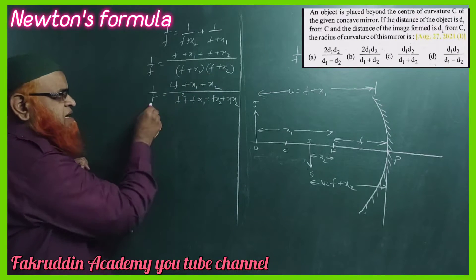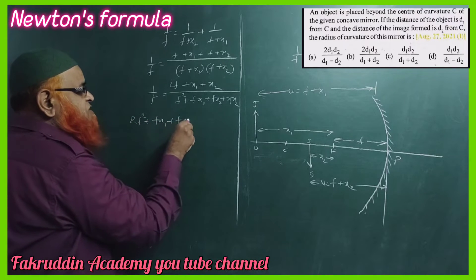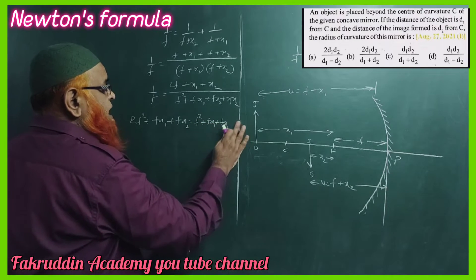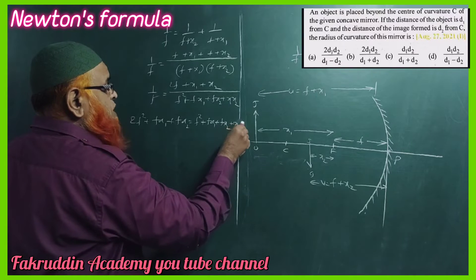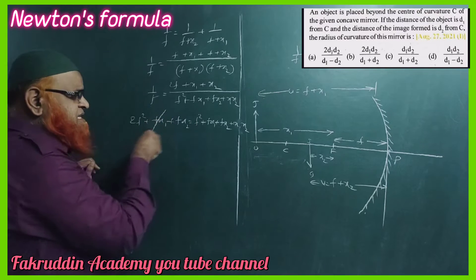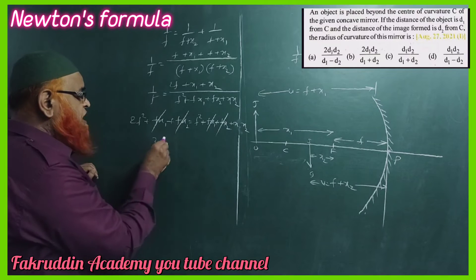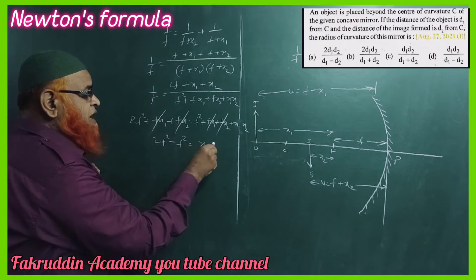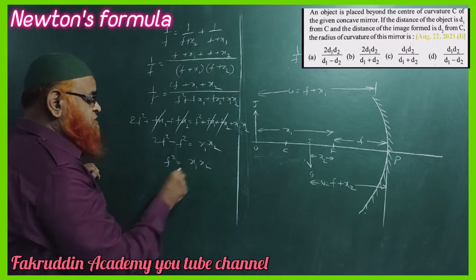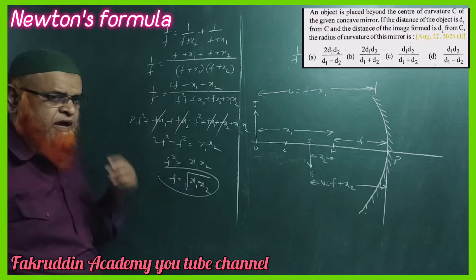Cross-multiplying gives: 2f² + fx1 + fx2 = f² + fx1 + fx2 + x1x2. The fx1 and fx2 terms cancel on both sides, giving 2f² - f² = x1x2. Therefore f² = x1x2, or f = √(x1x2). This is called Newton's formula.